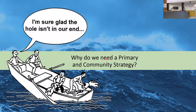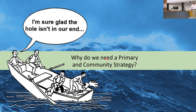So why a primary community strategy? You could look at the health system — sometimes it looks like a boat where one end is sinking. You've got no hope if you're in the end that isn't sinking, because you're going down with it. So the whole balance is important. In a health system, if primary community health services start to struggle and can't meet the needs of people, then more people go to hospital, and then the hospital is struggling and needs more resources.